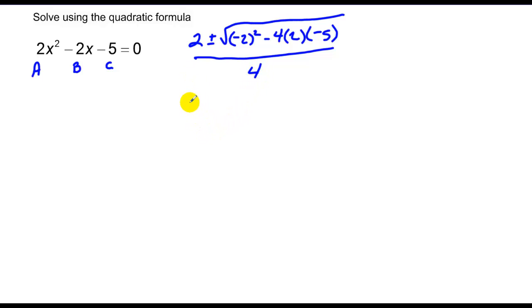Which gives me 2 plus or minus square root of 4 plus 40 over 4, or 2 plus or minus square root of 44 over 4.